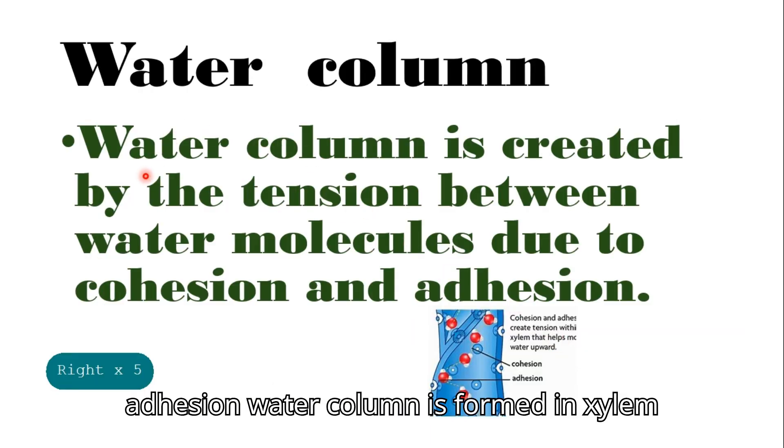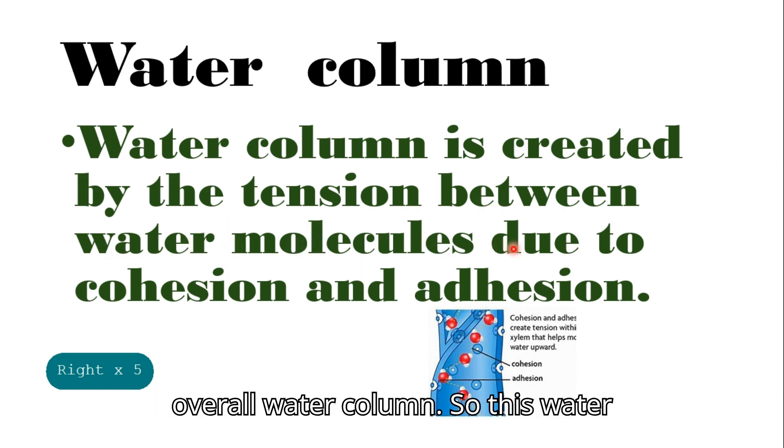Due to cohesion and adhesion, a water column is formed in xylem vessels which creates tension in the overall water column. So this water column moves upward by the action of transpiration.